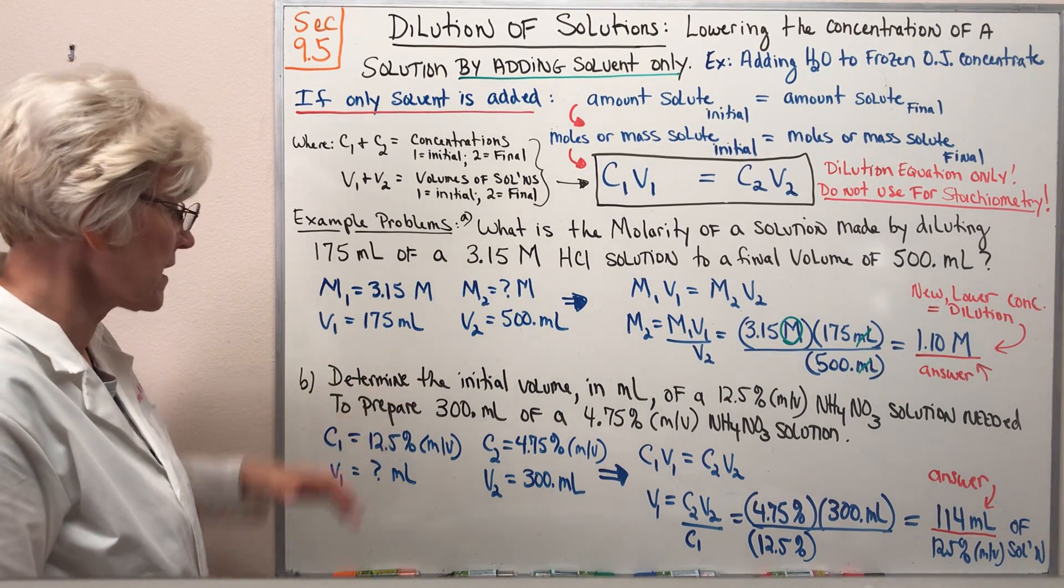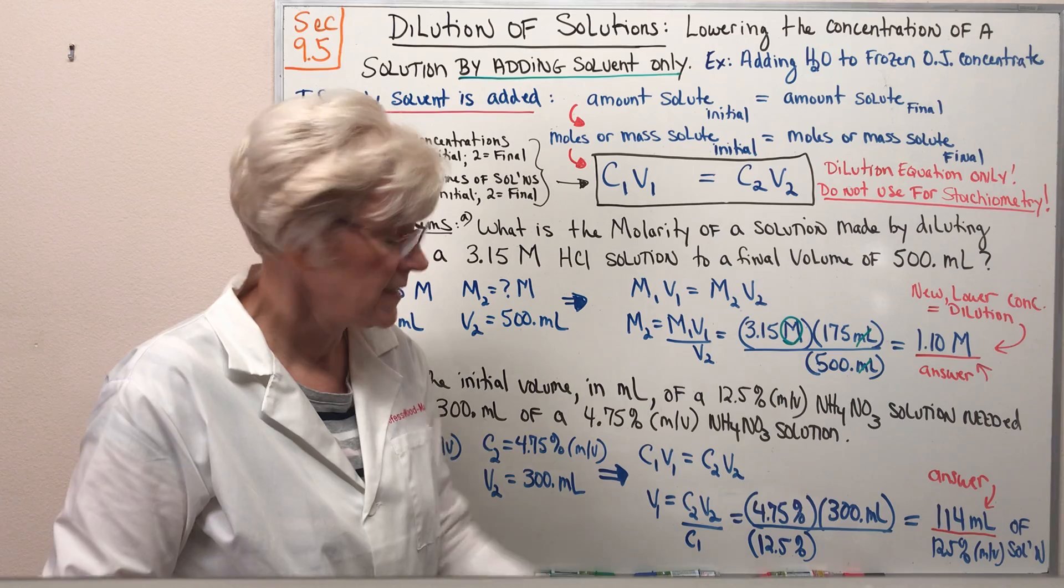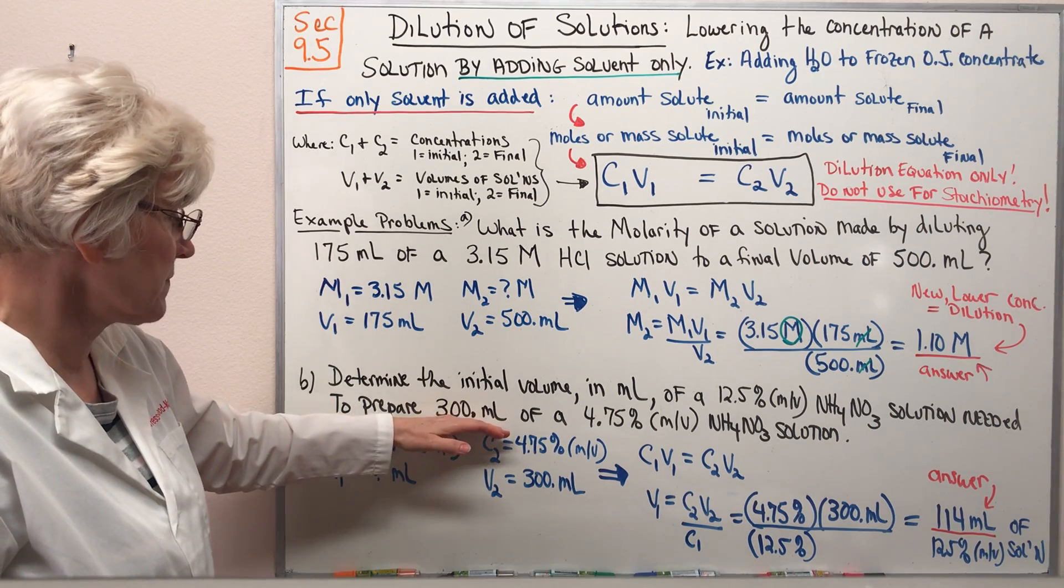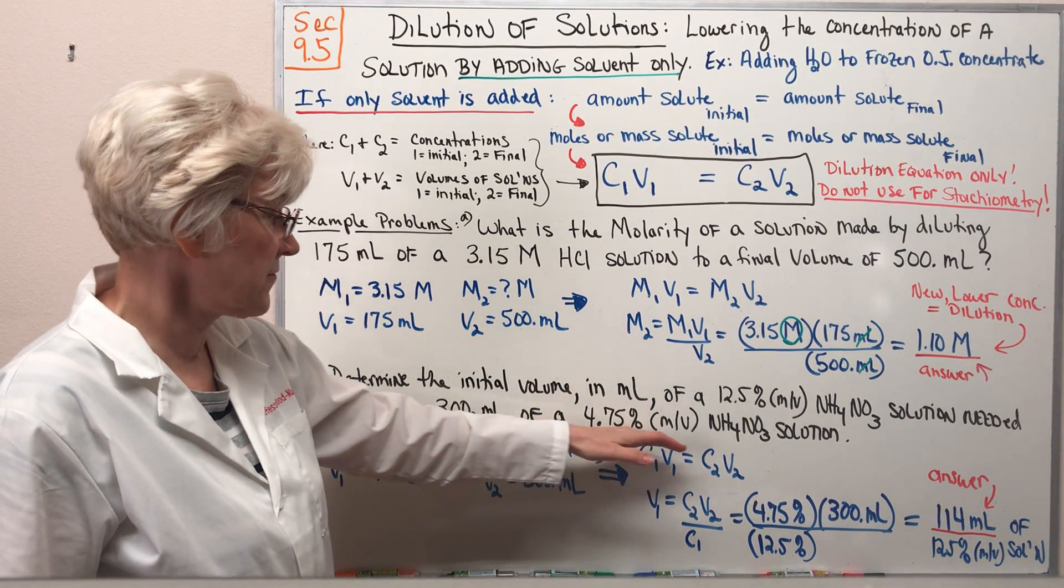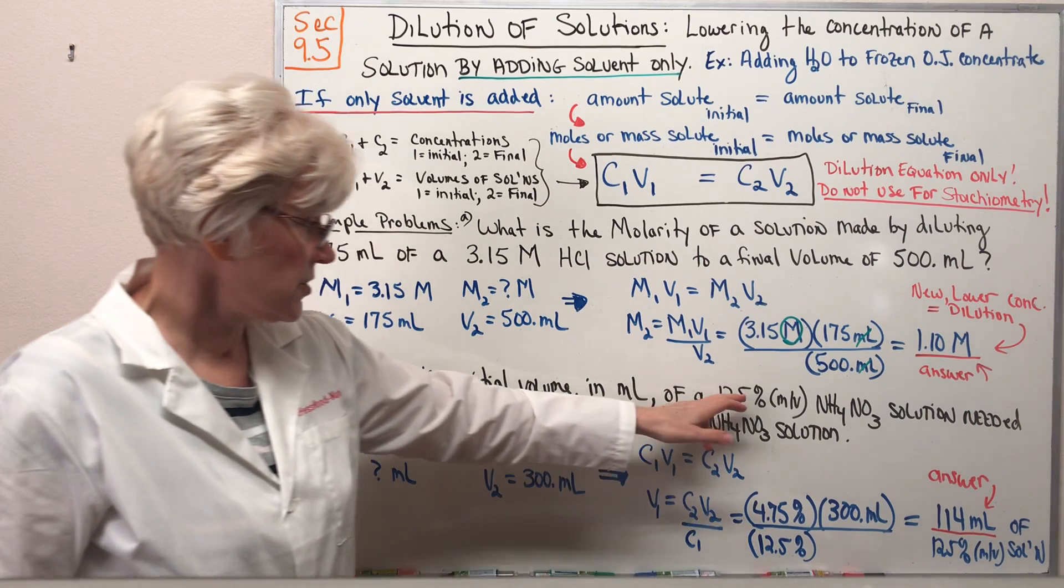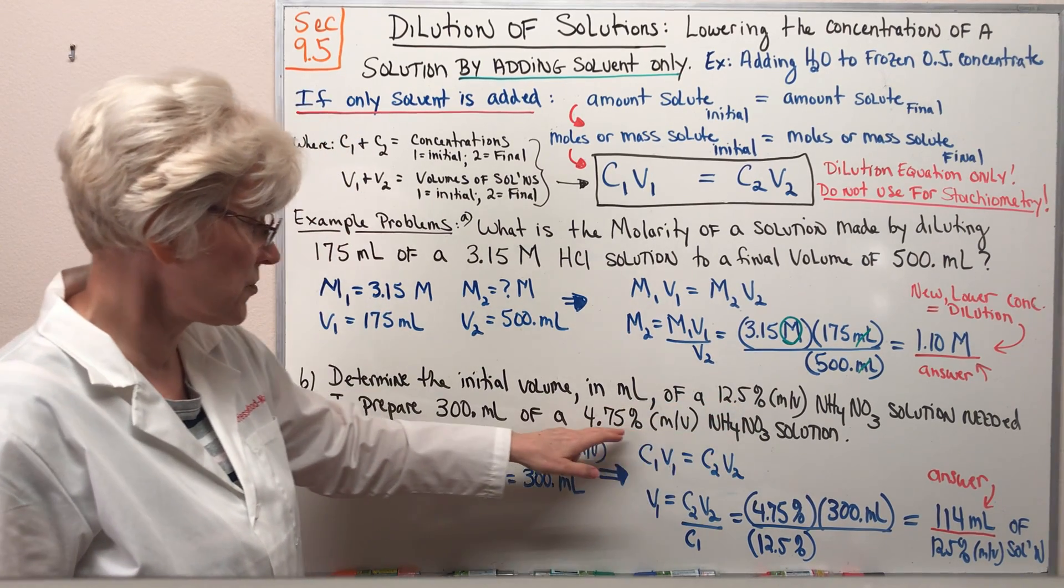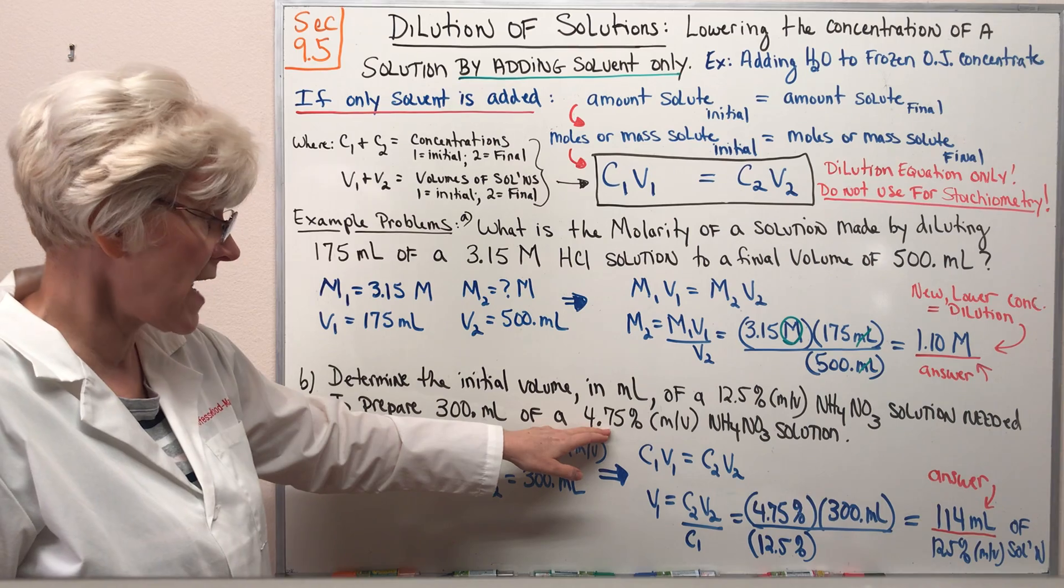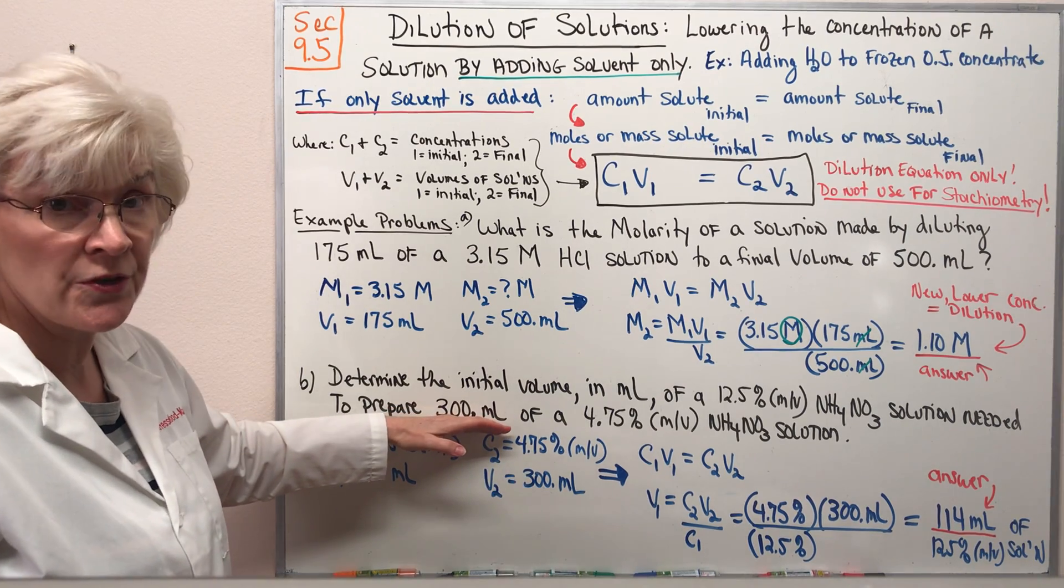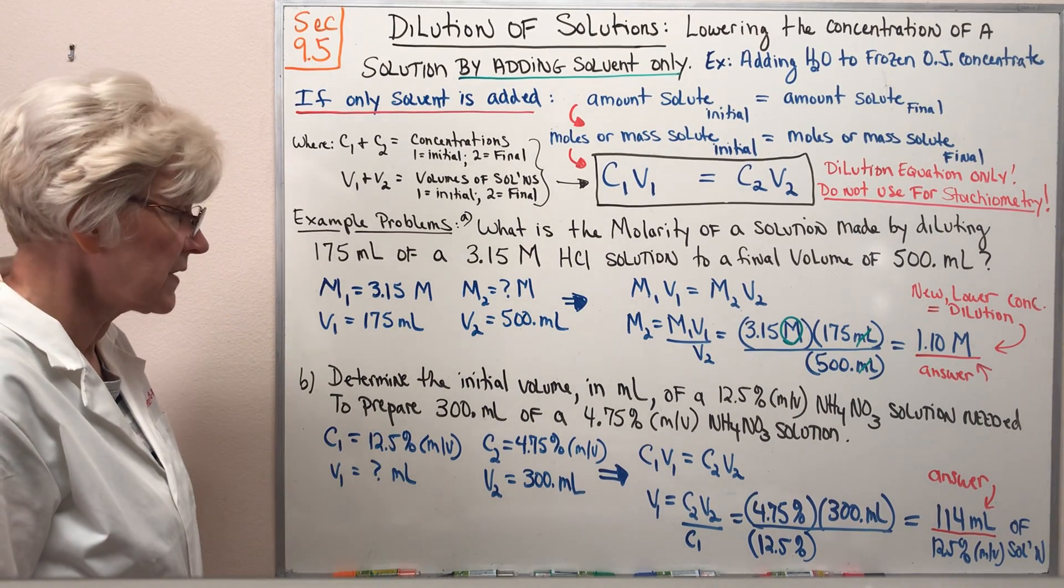Let's take a look at our second problem. Determine the initial volume in milliliters of a 12.5% mass/volume solution of ammonium nitrate needed to prepare 300 mL of a 4.75% mass/volume percent ammonium nitrate solution. So again, we're doing a dilution process. We're taking a 12.5% mass/volume ammonium nitrate solution and lowering its concentration down to 4.75% by diluting with water to a total new volume of 300 mL. What did that initial volume have to be?